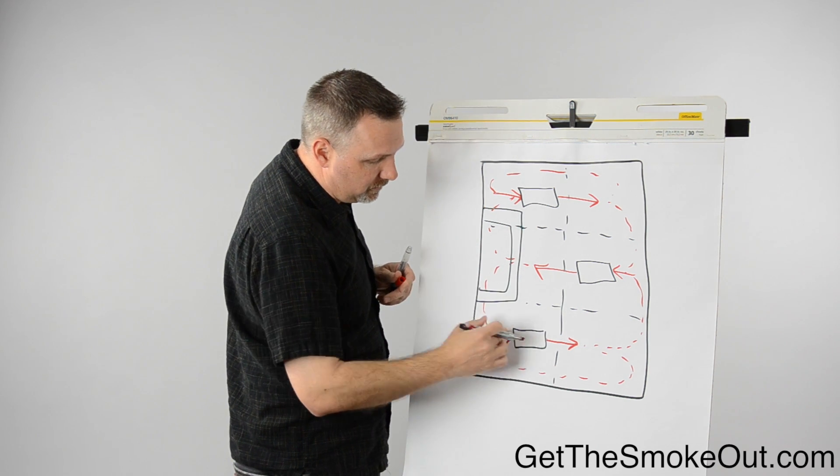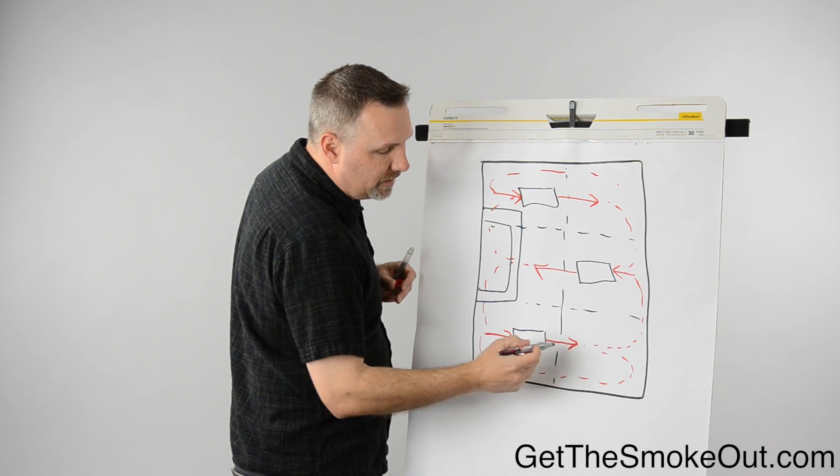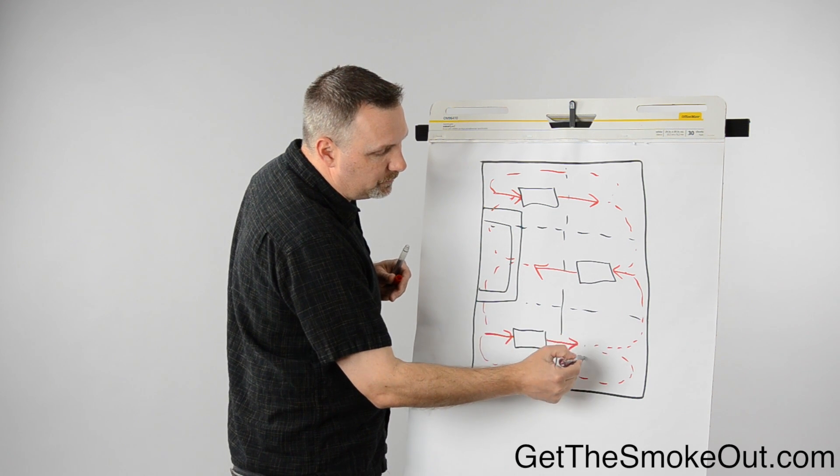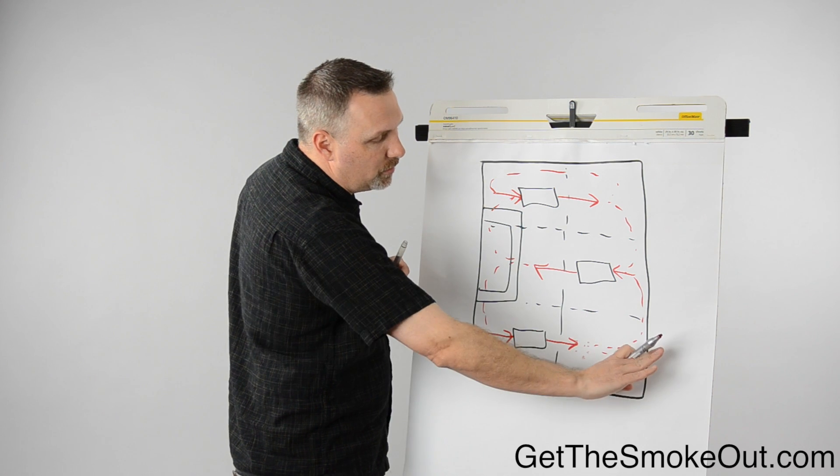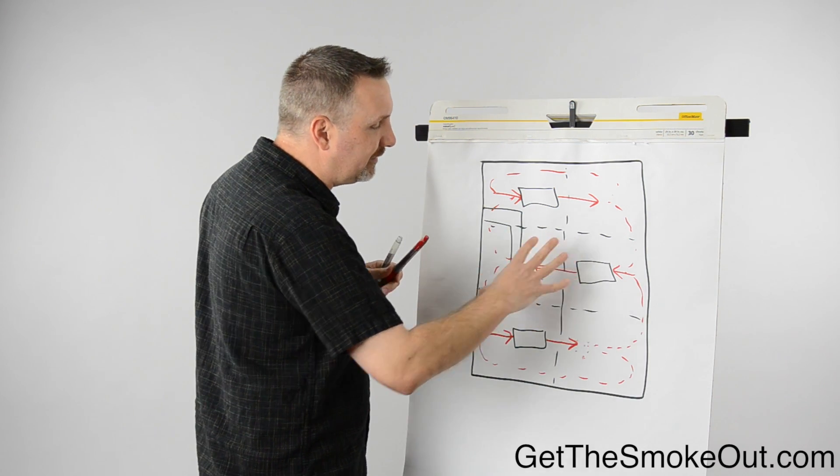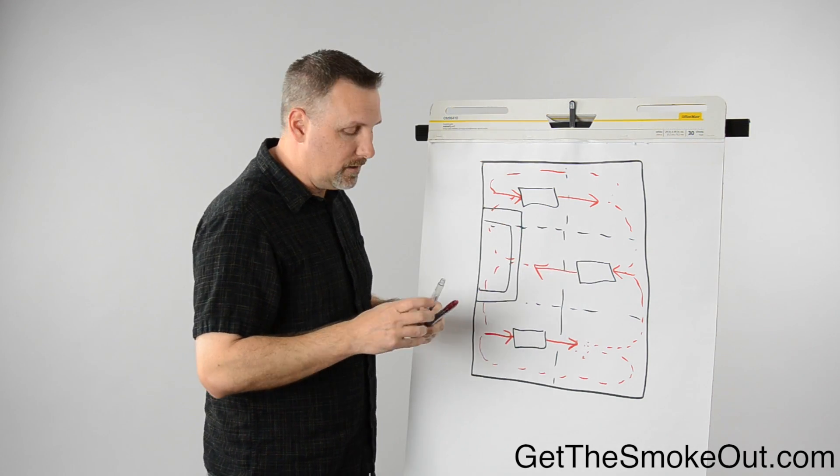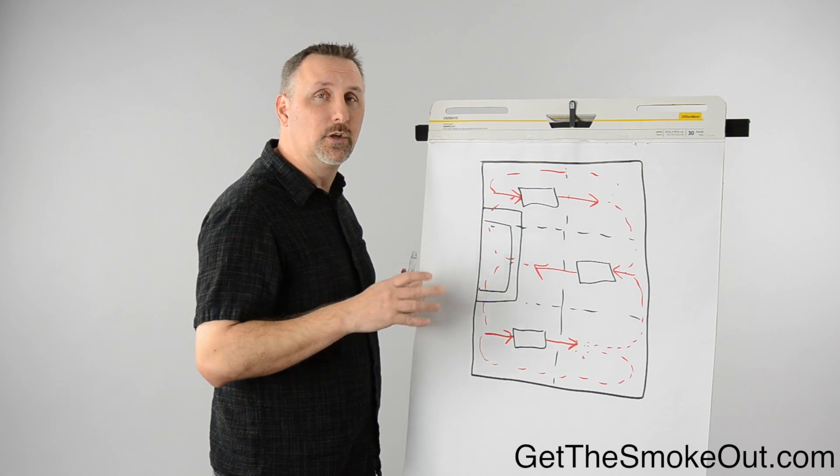That's why we stagger them so the input is closer to the wall, and then they push. Any smoke that happens to be created here will get blown down against the wall, swirl around, and get picked up by the other unit. This airflow to me makes a lot more sense.